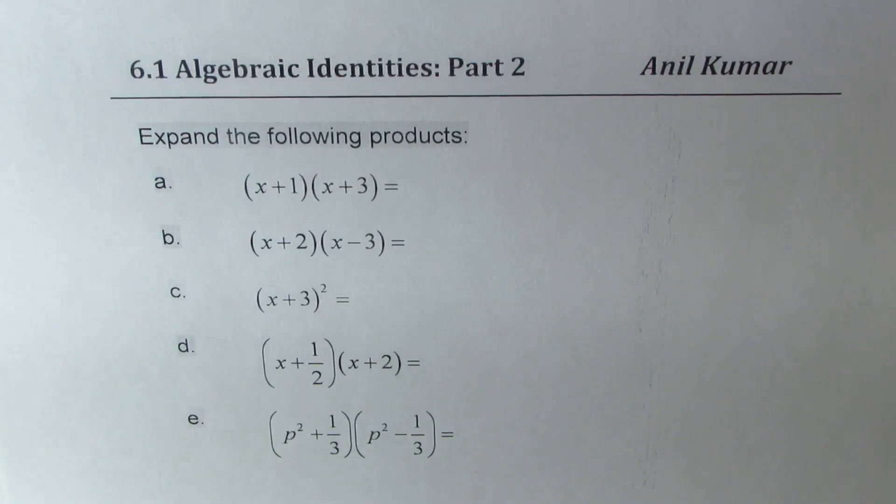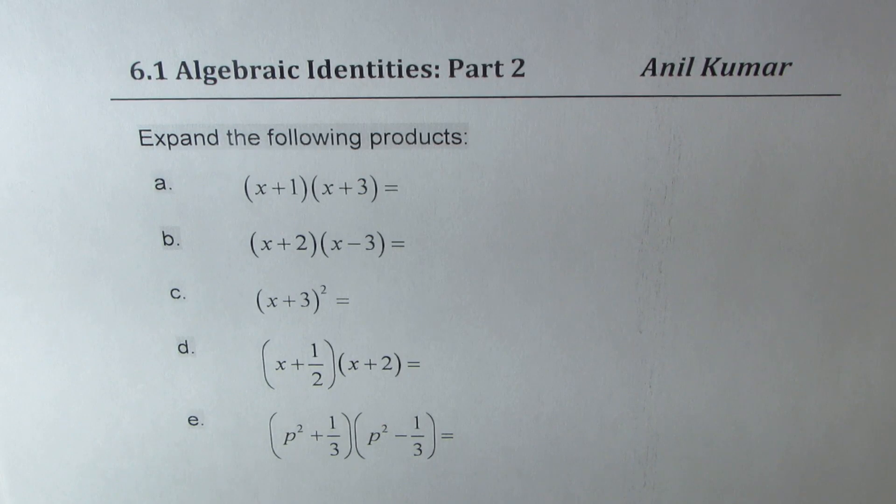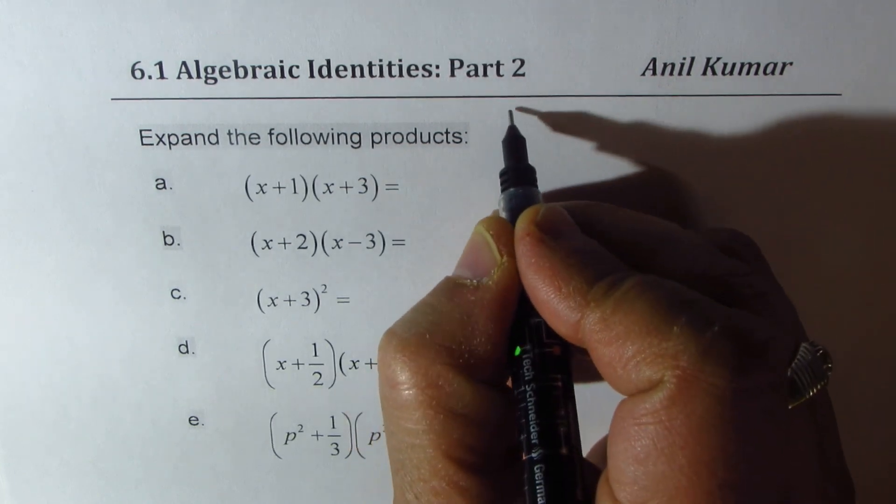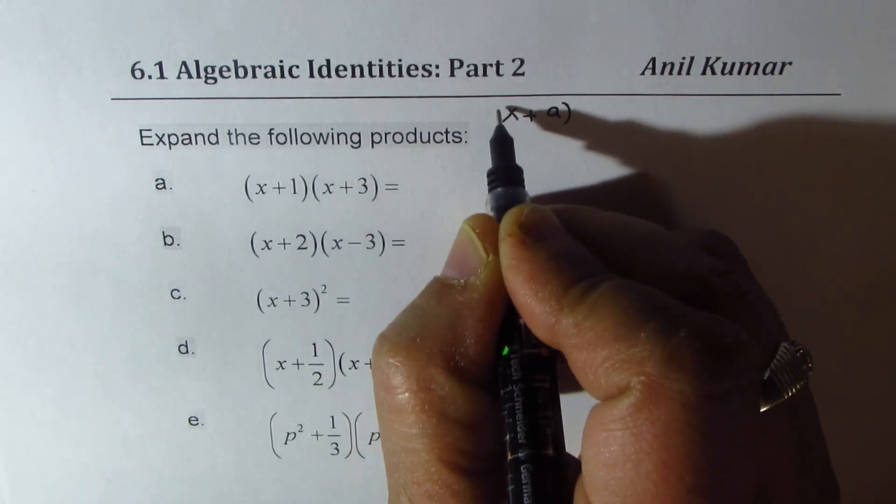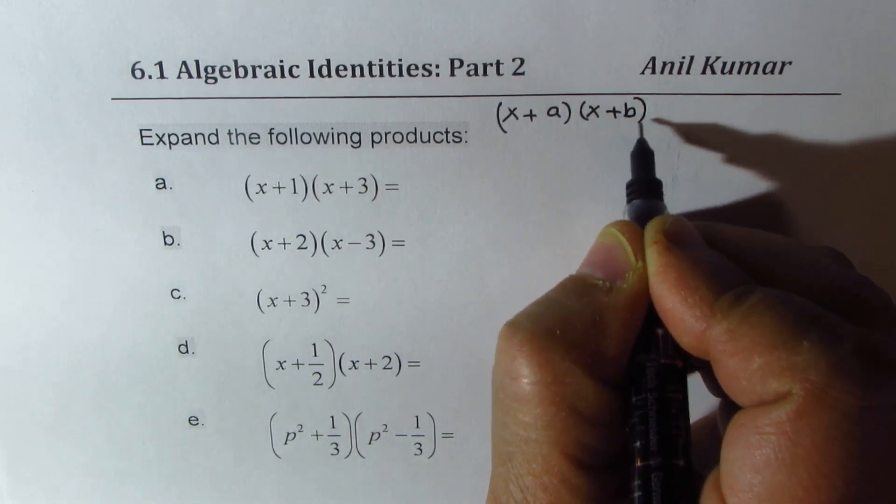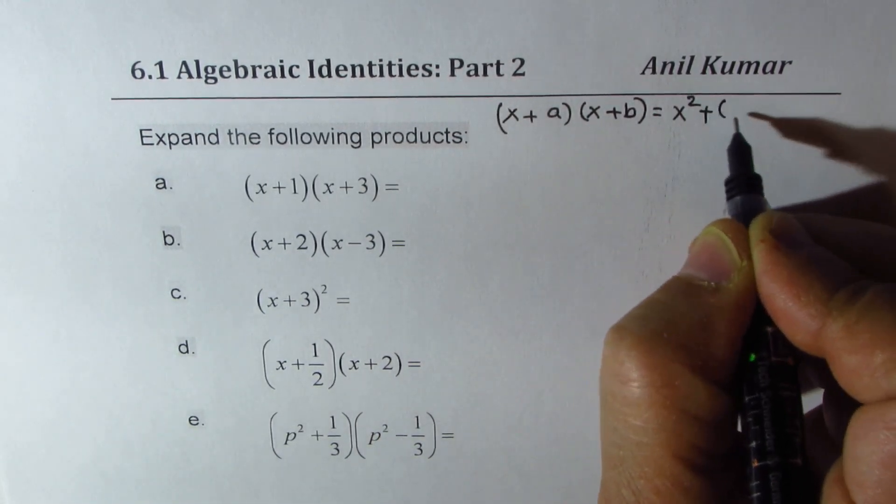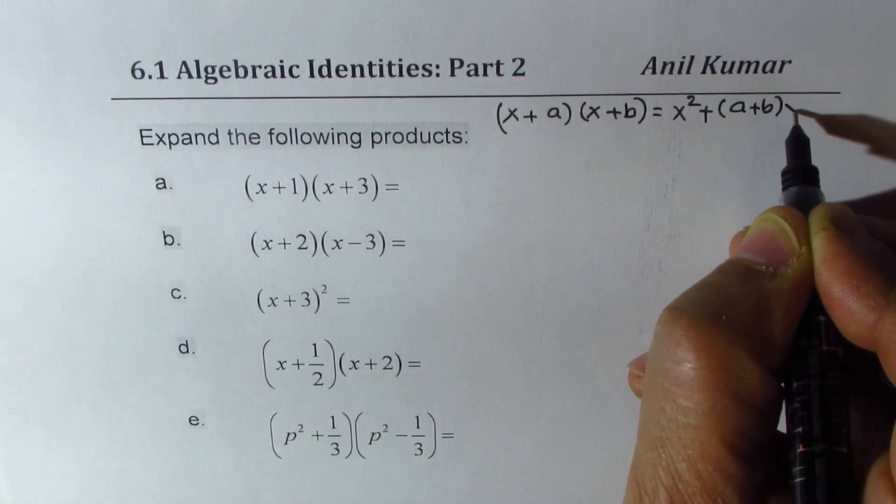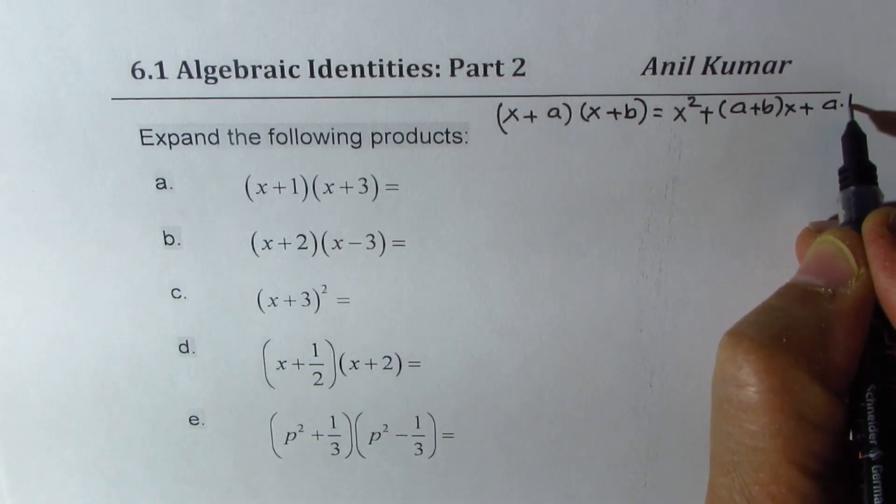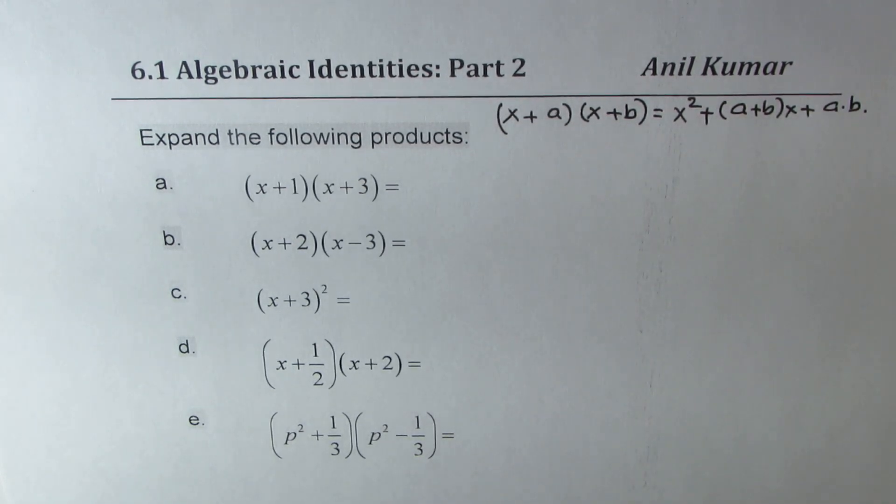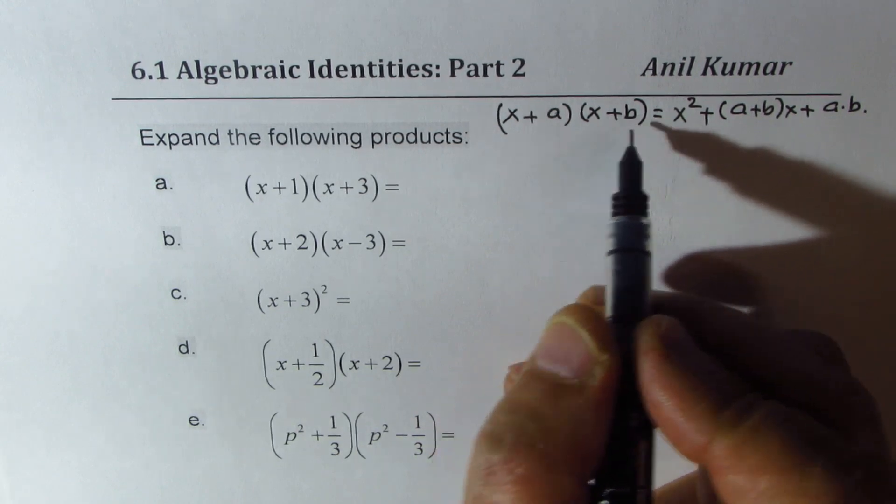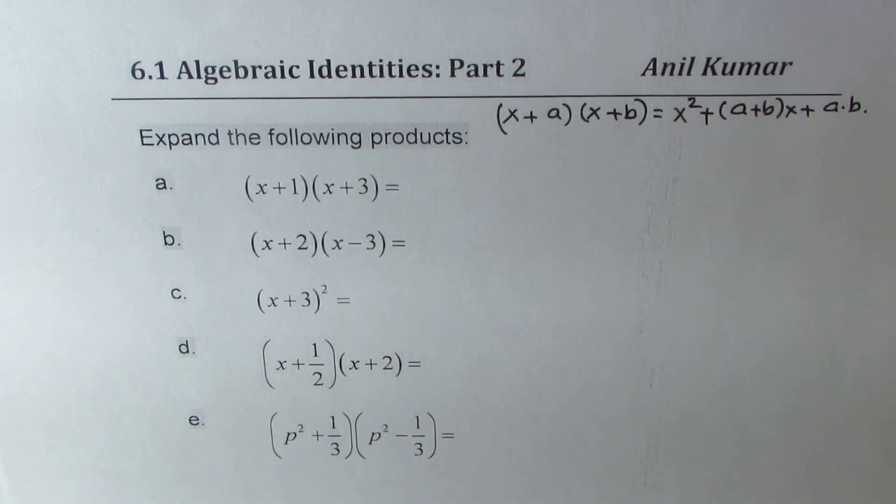So here are 5 questions for you to practice. You can pause the video, copy these questions, answer them, and then look into my suggestions. Now, I'll begin with writing the formula as such, which is x plus a times x plus b. And this could be written as x squared plus sum of a and b times x plus product of a and b. And we also learned a few special cases where a could be equal to b. So in that case, we get some more identities.